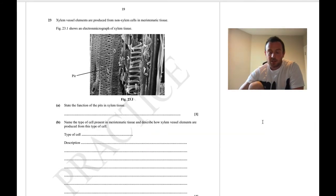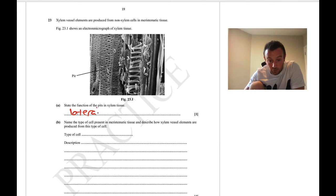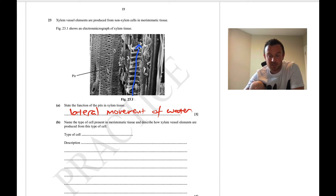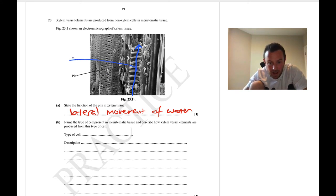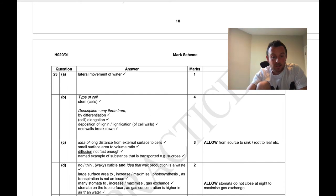Question 23: the function of the pit in xylem tissue. You must say 'lateral' movement of water. The xylem vessels are hollow so water can move upwards without the pits. The pits allow water to exit the xylem and move sideways — lateral movement of water. Movement of water through the xylem is not acceptable as an answer; it must specifically be lateral movement of water.